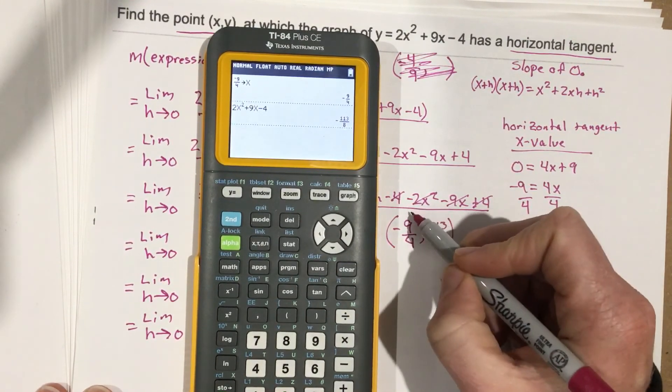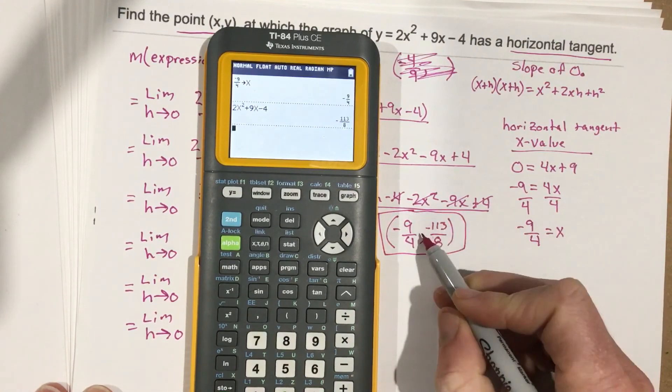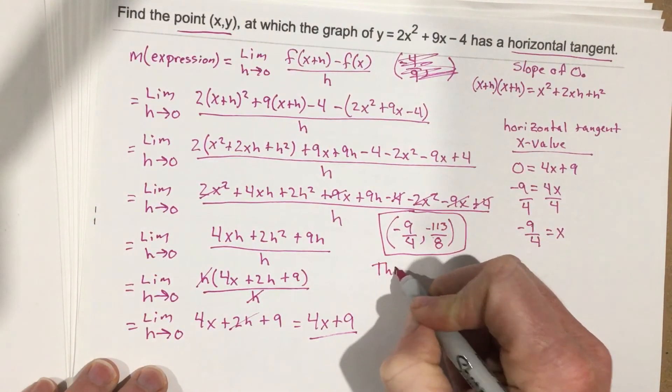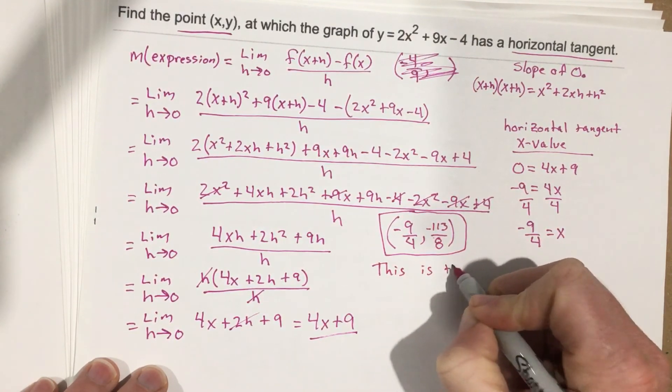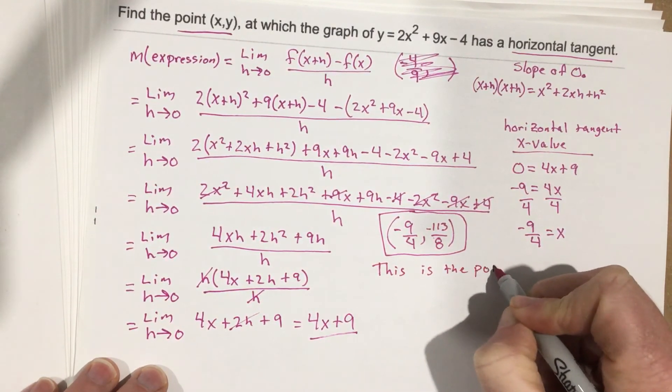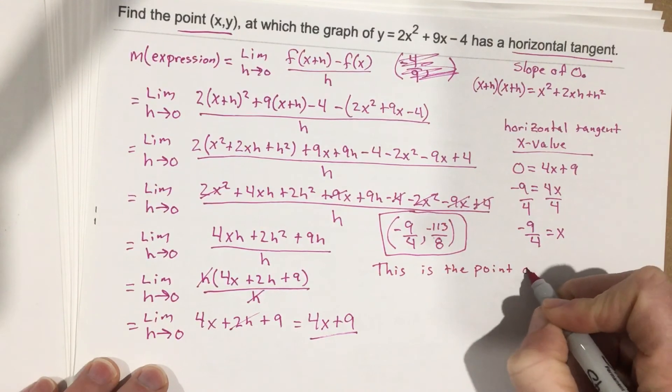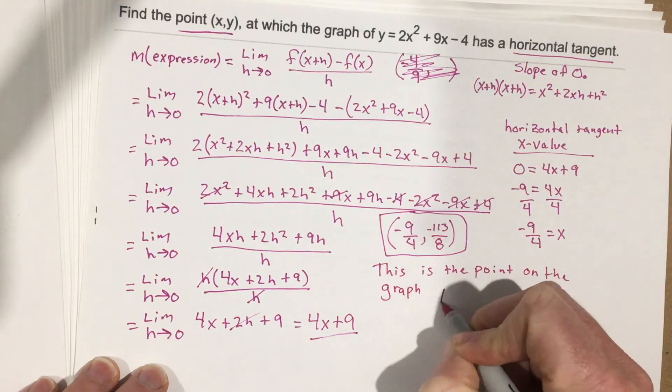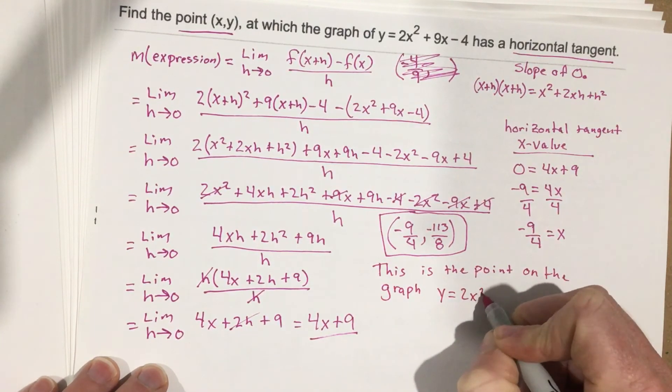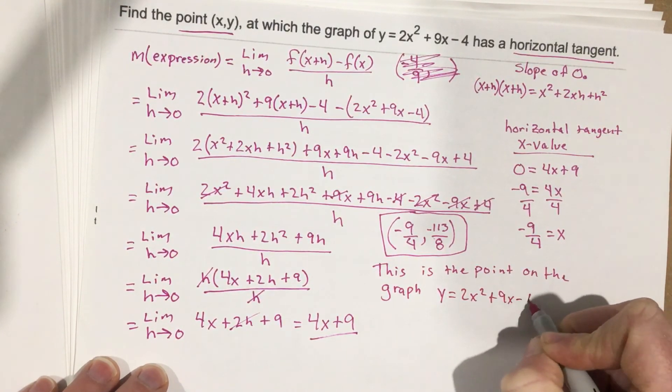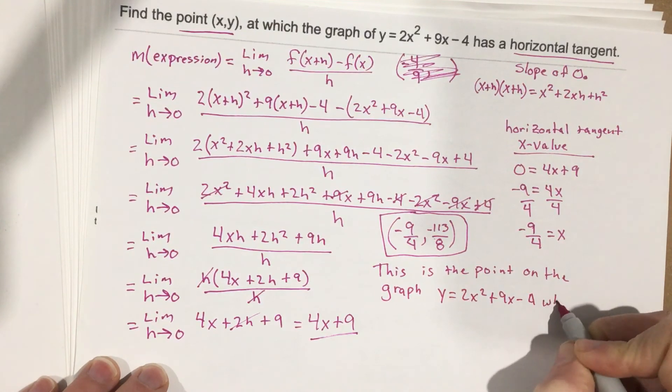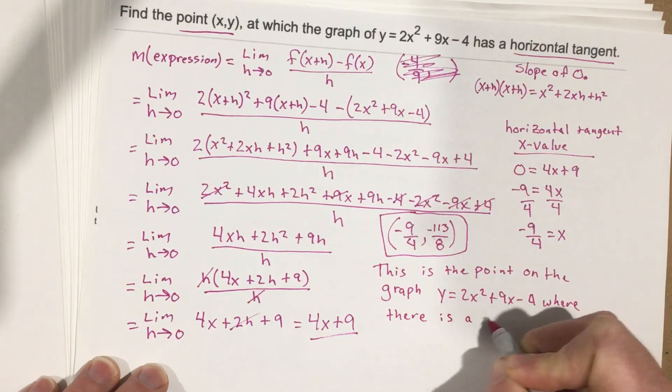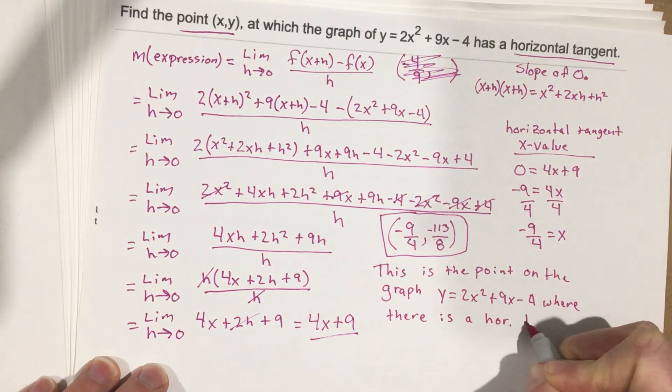We get negative 113 over 8. So our coordinate, this is the coordinate, so we would say this is the point on the graph y = 2x² + 9x - 4 where there is a horizontal tangent.